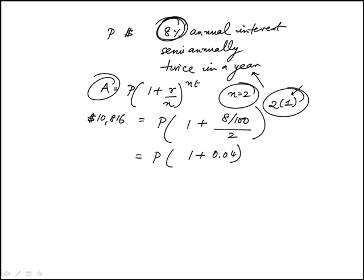Or you can just think of having this interest, so 4% equivalent would be 1.04. So this is P times 1.04 squared, so the principle is 10,816 divided by 1.04 squared.